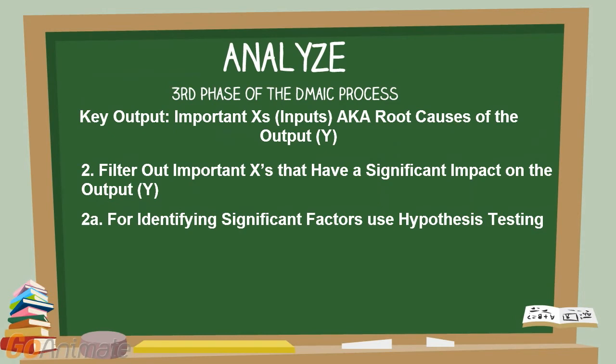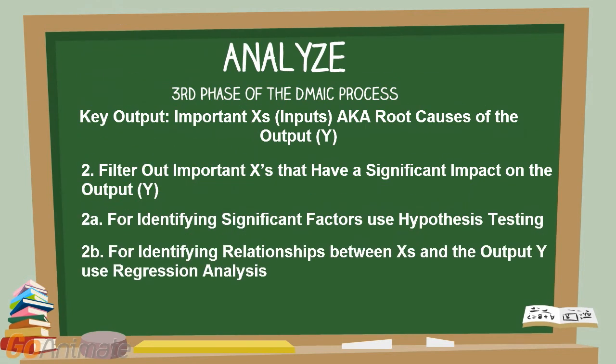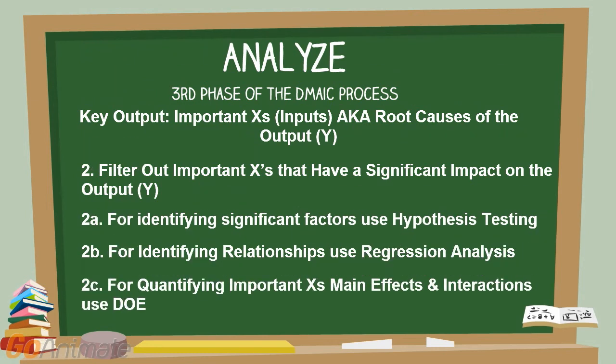For identifying significant factors, use hypothesis testing. Hypothesis testing is an inference test that allows us to make predictions about a population based on a sample. For identifying relationships between Xs and the output Y, use regression analysis. For quantifying important Xs' main effects and interactions, use design of experiments.